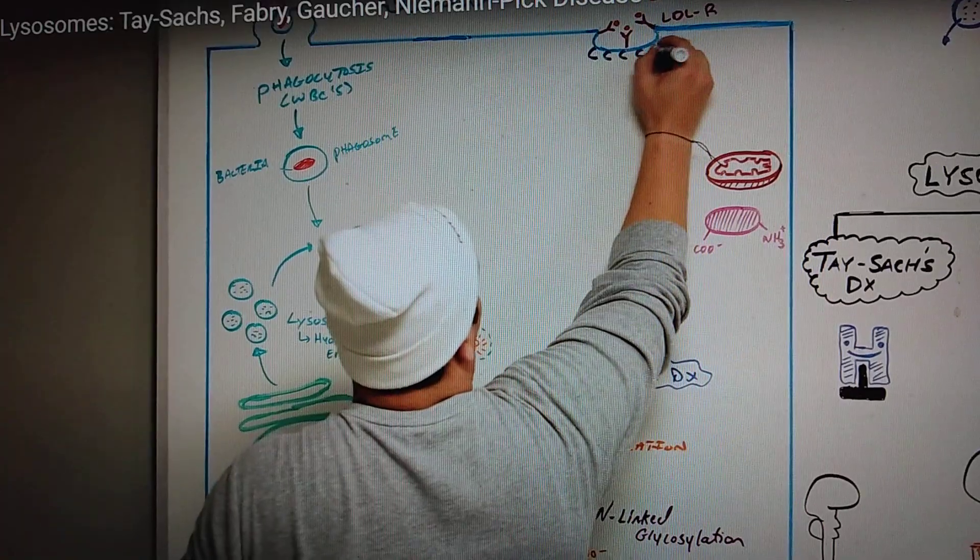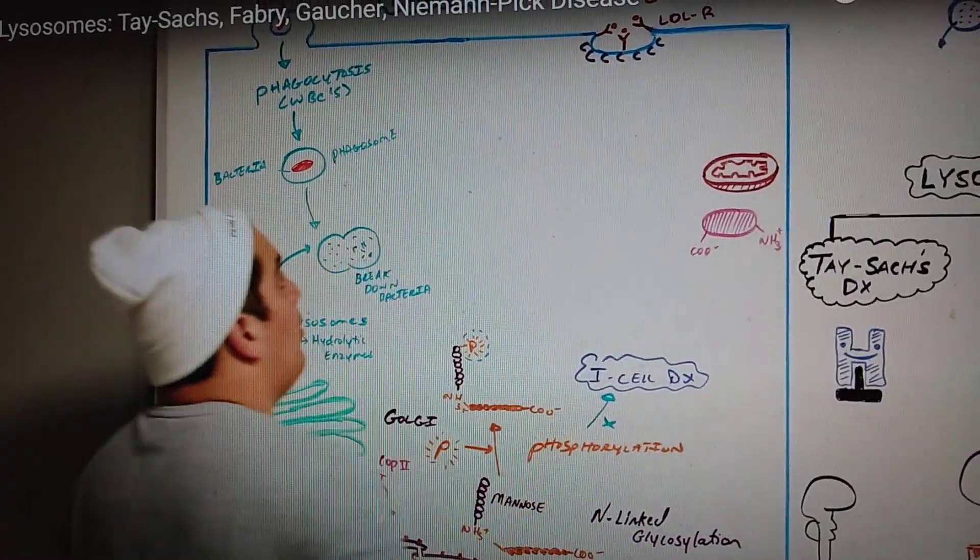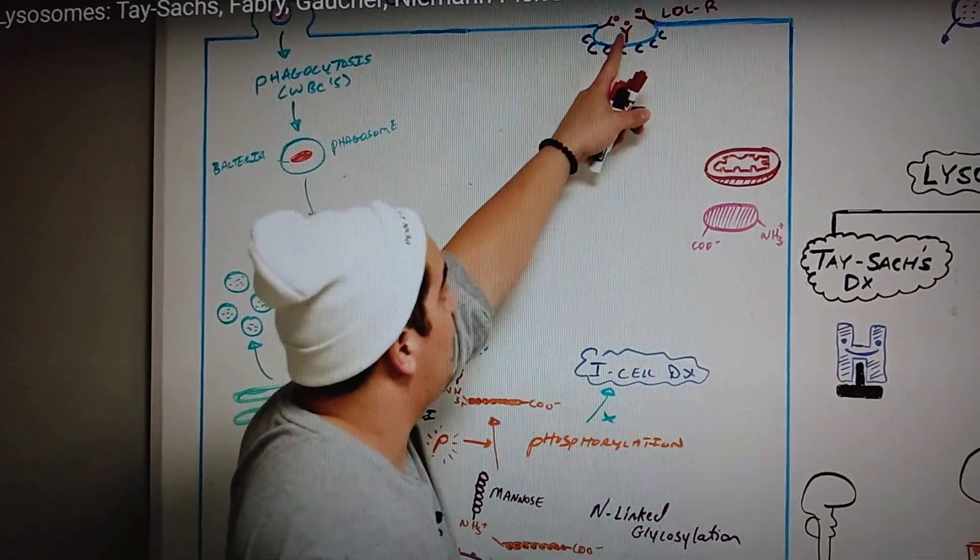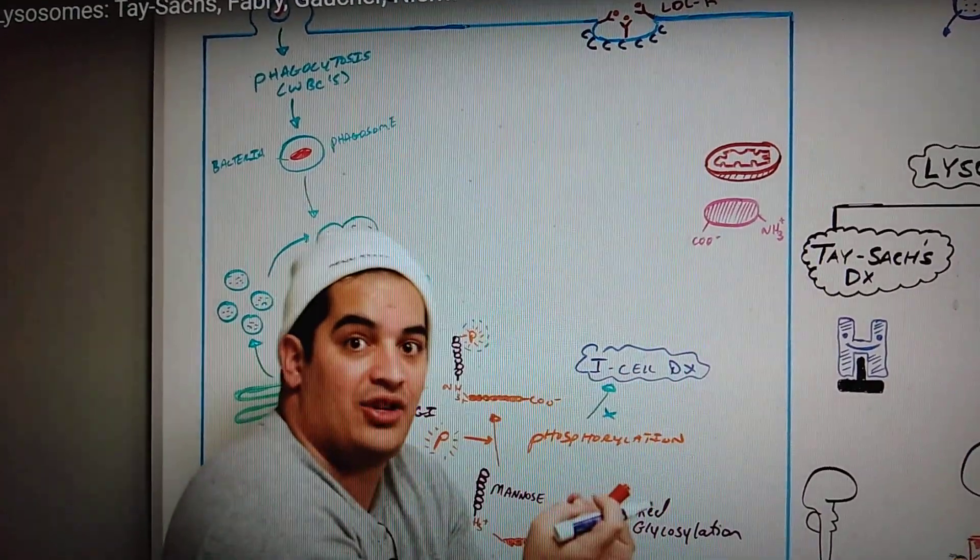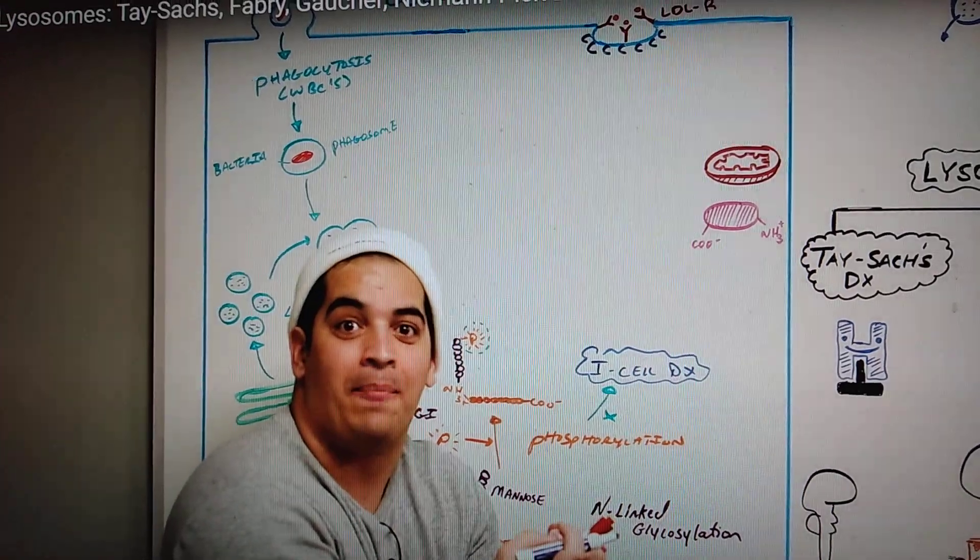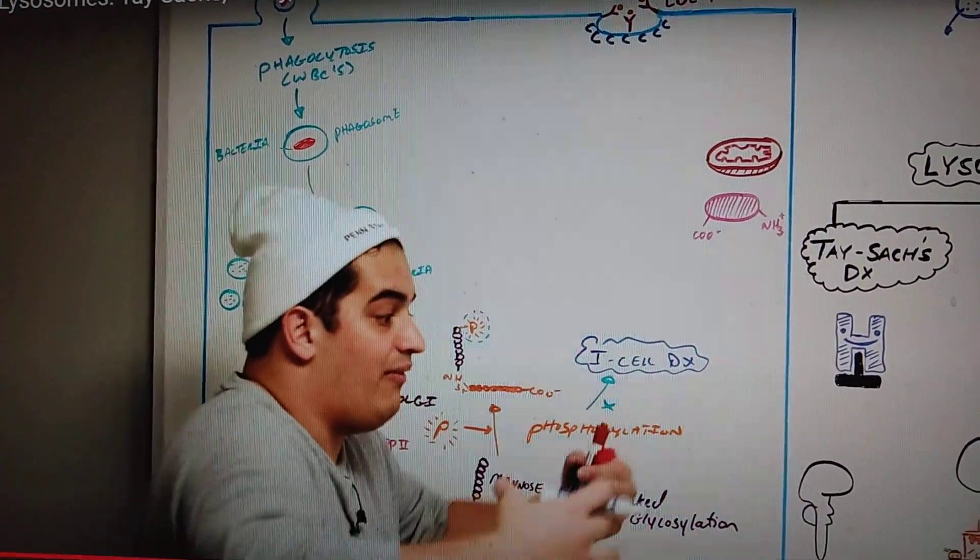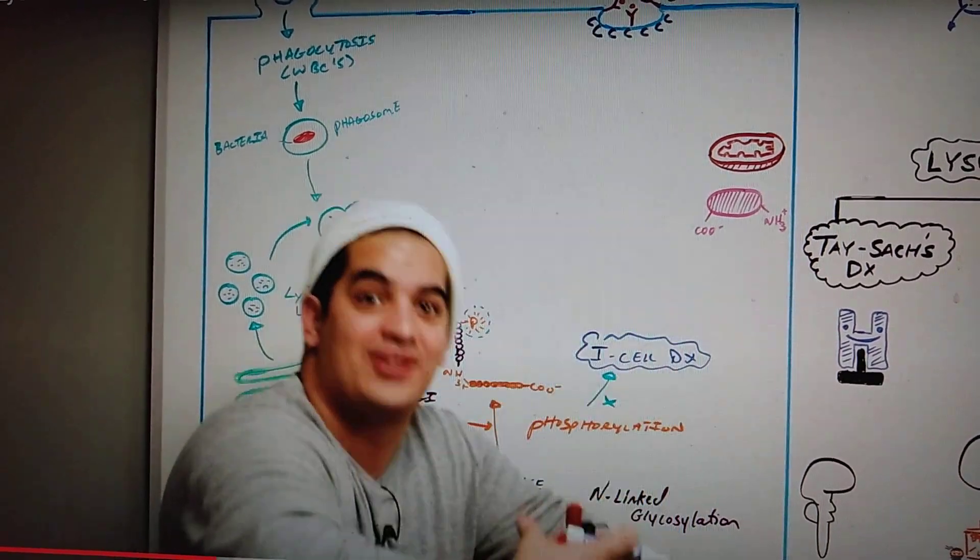And what the clathrin molecules do is they bind to the membrane which has the LDL receptor and the LDL bound to it and creates a little invagination called a clathrin coated pit. Then it continues to pull until it invaginates and creates a vesicle or an endosome.